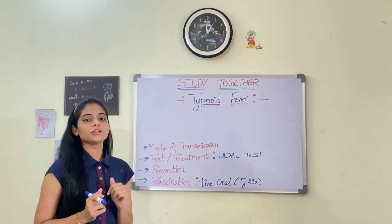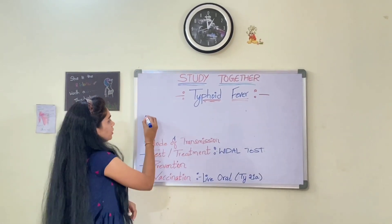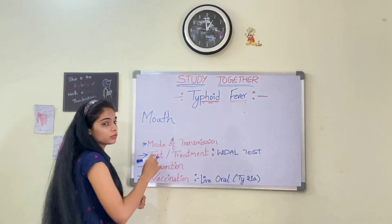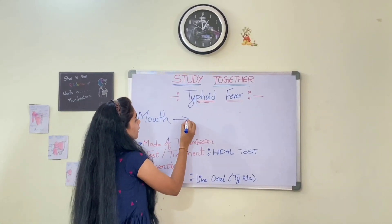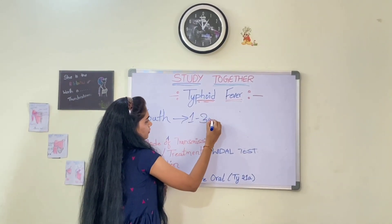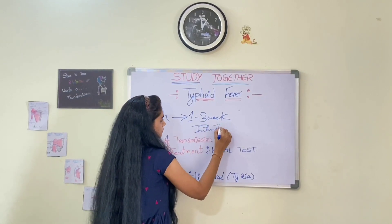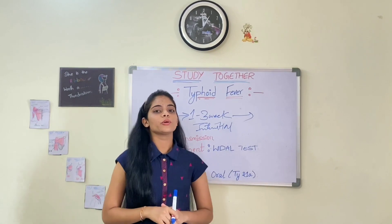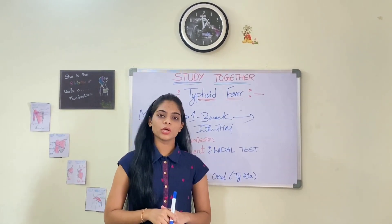You see rashes on your neck area and abdominal area. Coming to mode of transmission — how the infection spreads — first, through contaminated food or water. The causative organisms enter into your mouth through contaminated food and water, and then the bacteria lives for one to three weeks in your intestinal area.